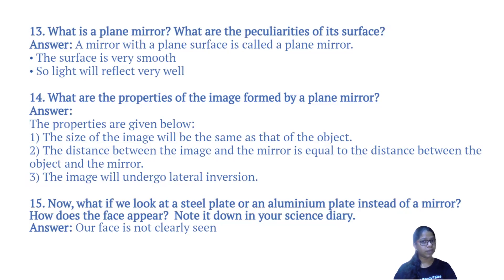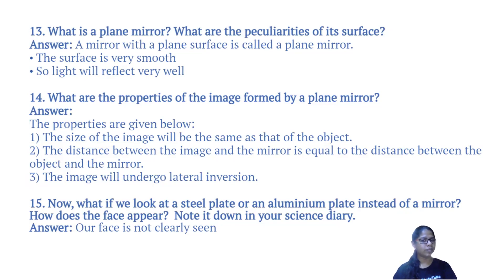What are the properties of the image formed by a plane mirror? The size of the image will be the same as that of the object. The distance between the image and the mirror is equal to the distance between the object and the mirror. The image will undergo lateral inversion. What if we look at a steel plate or an aluminum plate instead of a mirror? Note it down in your science diary.